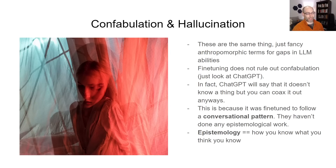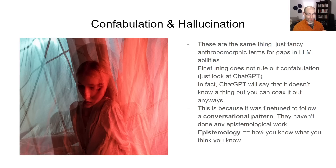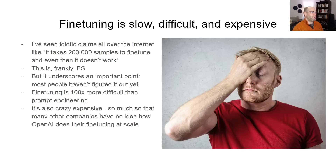There are mathematicians I've talked to who say that a single large language model as we know it today will never have the ability to understand what it does and does not know. You will have to have a system or a fundamentally different kind of model in order to have any sense of epistemology. This is why fine-tuning will probably never — at least with the current paradigm — be good as an information store. Not as a reliable one.